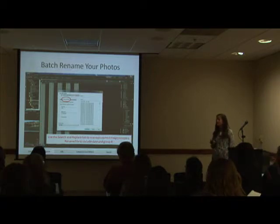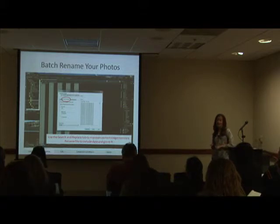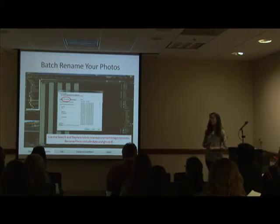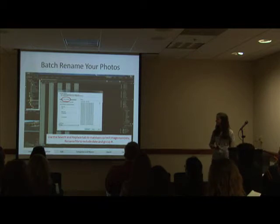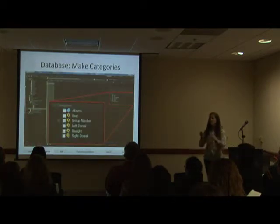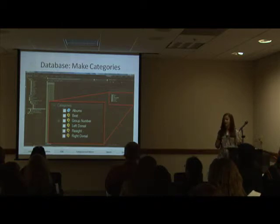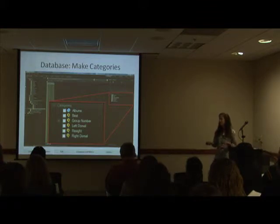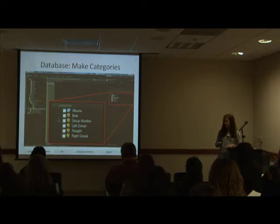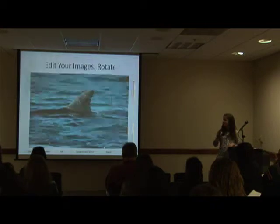John mentioned batch renaming your photos to make them appropriate for the project and the day you captured them. I like to use location — like SD for San Diego — then the date, then the group number, and keep the image number the same. Pretty standard. Within ACDC, the beauty of the program is its cataloging system — a database where you can create categories to organize your images. The five main categories I use are: vest and re-sight, left dorsal, right dorsal, and a group number assigned to each image.